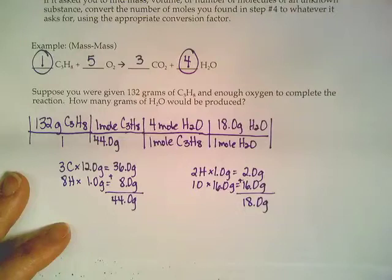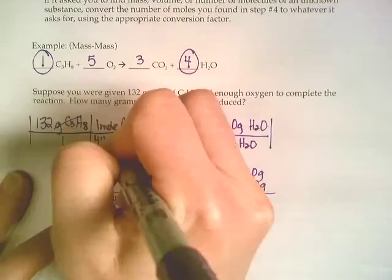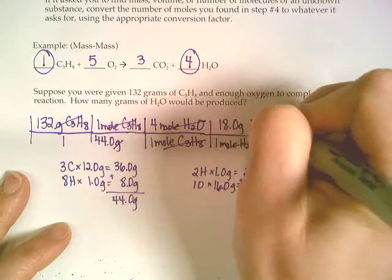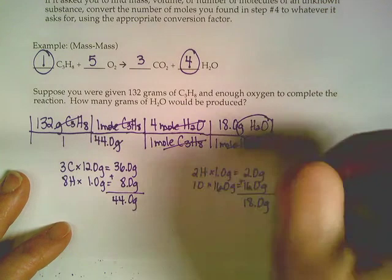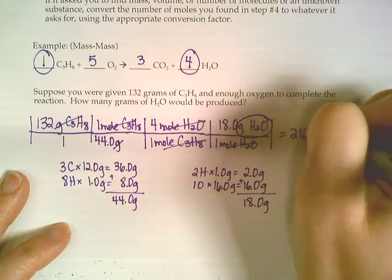Now everything's going to cancel out except for my grams of water. Grams of C3H8 are gone. Moles of C3H8 are gone. Moles of water are gone. I'm just left with grams of water. We multiply across, and you would get 216 grams worth of water.